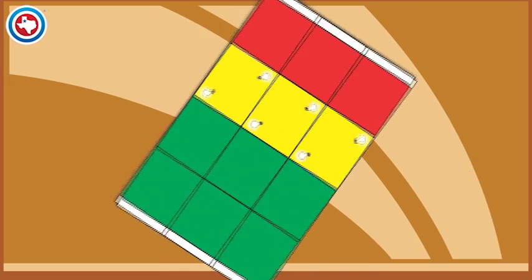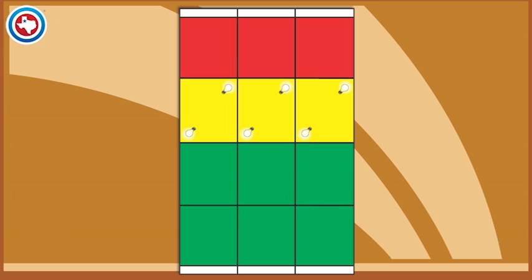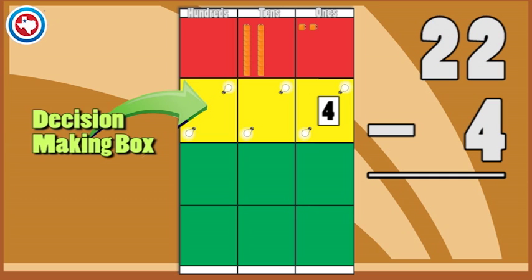In subtraction, the board is turned upside down so that the decision making box is the second row.